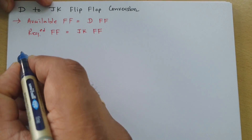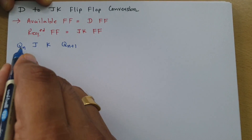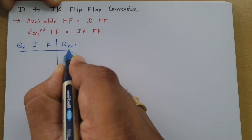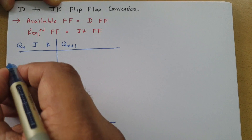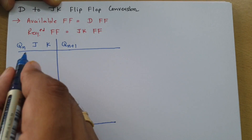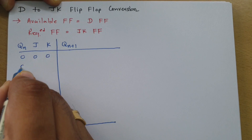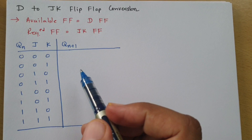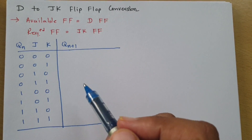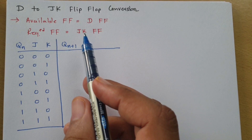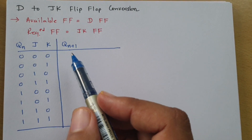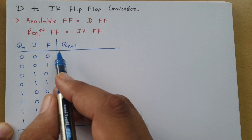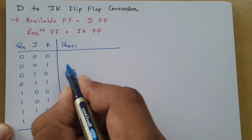The characteristic table is a table of Qn and JK with respect to Qn+1. With three variables there are eight total combinations. For the JK flip-flop characteristic table, I remember it as 0011110. If you want to understand this table in detail, refer to my previous videos on JK flip-flop.